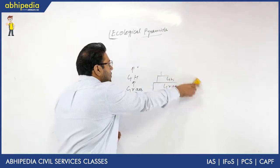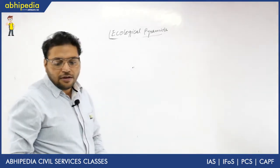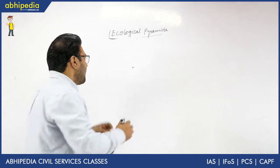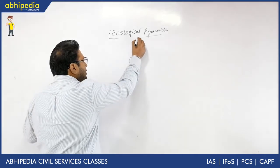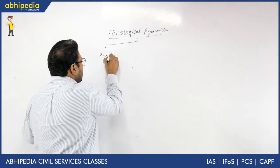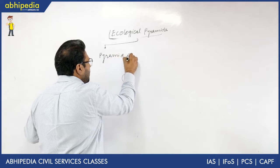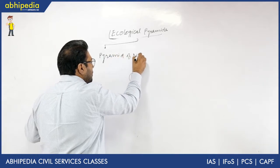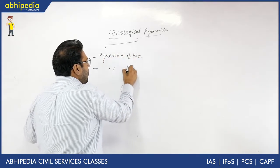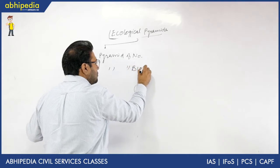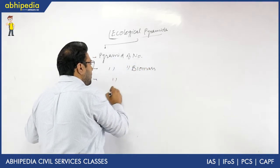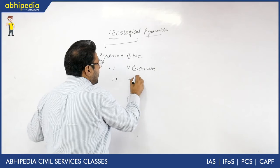Now the important thing is the types of ecological pyramids. Basically there are three types: the first is the Pyramid of Number, the second is the Pyramid of Biomass, and the third is the Pyramid of Energy.